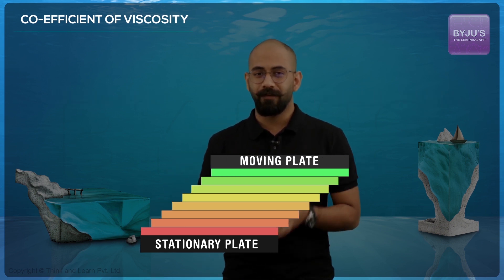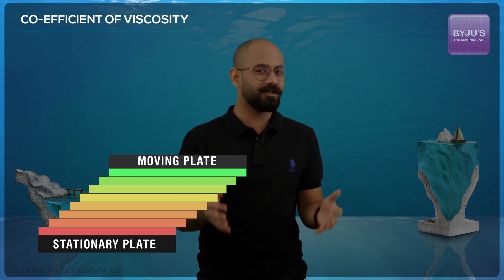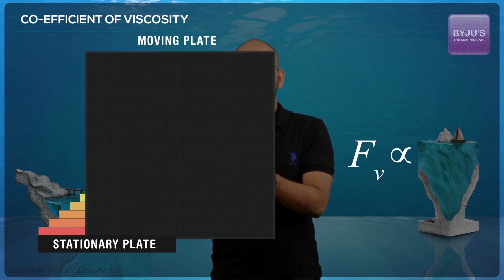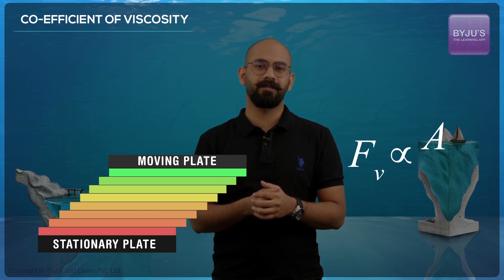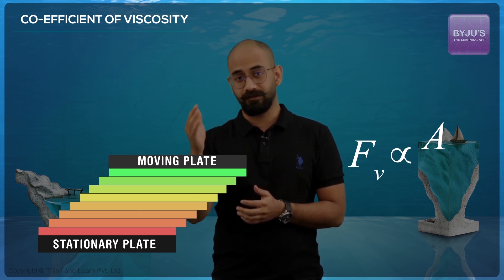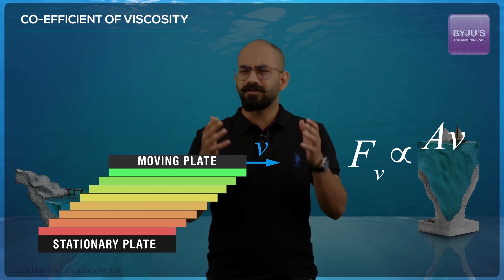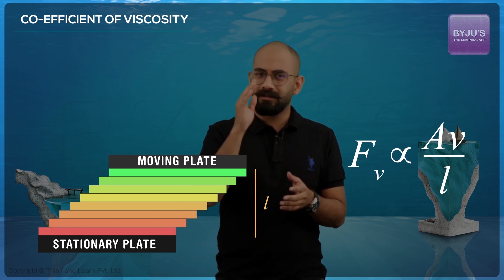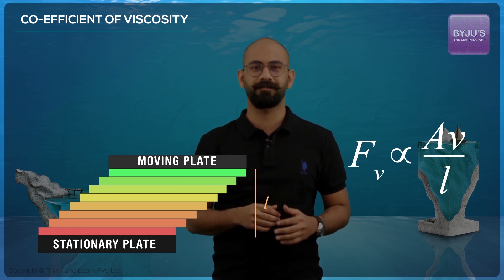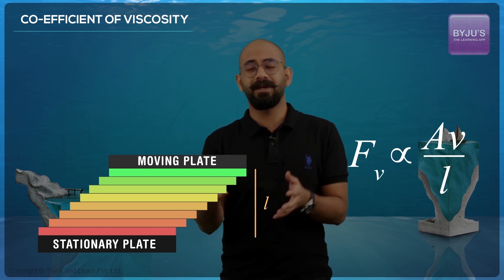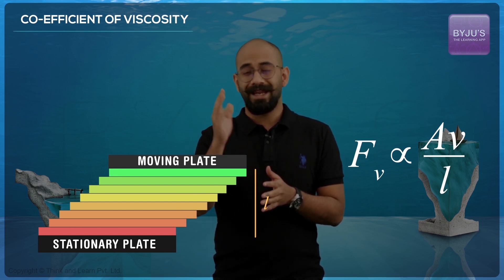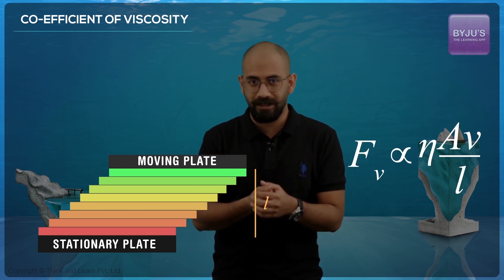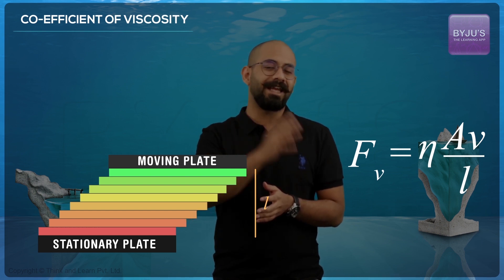Experimentally, we find that the magnitude of this viscous force between any two layers is proportional to the area of contact A, which is essentially the area of the plate, the speed of the topmost plate V, and it's inversely proportional to the depth L, which is the distance between the topmost plate and the bottommost plate. So we find that F, the viscous force, is proportional to A·V/L. Introducing a constant of proportionality, we can write F = η·A·V/L.